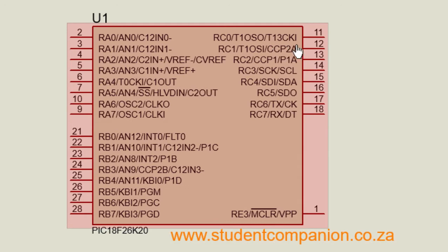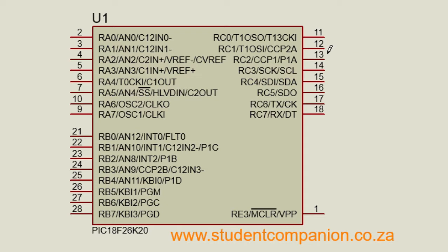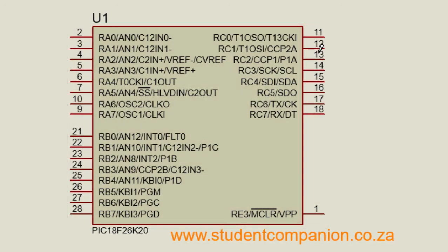When the CCP peripheral is configured in capture mode, it allows timing of the duration of an event. When configured in compare mode, the peripheral constantly monitors a timer counter value and compares it to a value set in the application — when they match, it triggers an event. When configured in pulse width modulation mode, the peripheral produces a variable pulse width signal based on a pulse width and period value set in the application code.